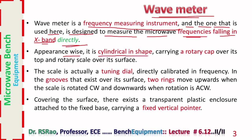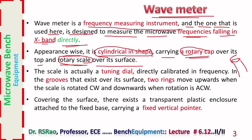Appearance-wise, the wave meter is cylindrical in shape, carrying a rotary cap over its top and a rotary scale over its surface. This scale is attached to the cap, so when you rotate the cap the scale also rotates. The scale is over a cylindrical surface attached to the cap, therefore the scale rotates when the cap is rotated. The scale is actually a tuning dial directly calibrated in frequency.